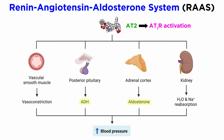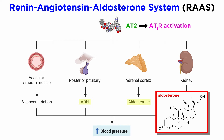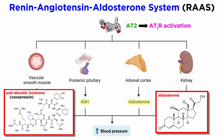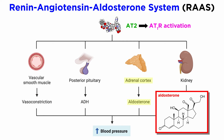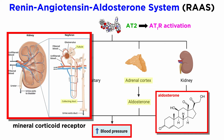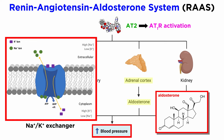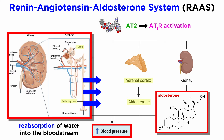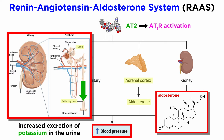AT2 also stimulates the secretion of two hormones that act to increase blood pressure: aldosterone and antidiuretic hormone, or ADH, also known as vasopressin. Aldosterone is a steroidal mineralocorticoid secreted by the cortex of the adrenal gland. Aldosterone increases blood pressure mainly through activating the mineralocorticoid receptor located on the nucleus of cells in the collecting duct and distal tubules of the nephron. The activation of this nuclear receptor increases protein expression of the basolateral Na+/K+ exchanger, which uses ATP to pump two potassium ions into the lumen of the collecting duct in exchange for three sodium ions. This results in an osmotic gradient that leads to the reabsorption of water into the blood, which increases blood pressure and increases excretion of potassium in the urine.